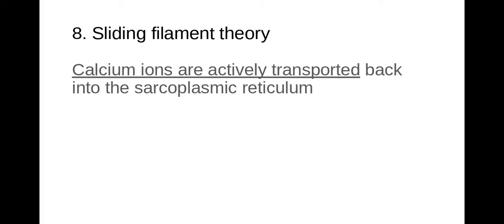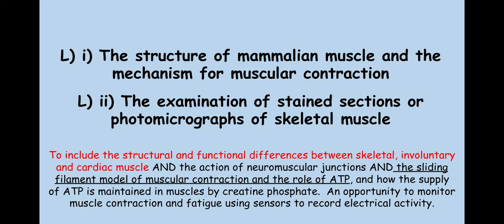At the end of muscle contraction, those calcium ions need to be actively transported back to the sarcoplasmic reticulum, where they'll be stored until needed again. This requires ATP because active transport requires ATP. So there are two places where ATP is needed: one to break the cross-bridge, and the second to actively transport calcium ions back to the sarcoplasmic reticulum.